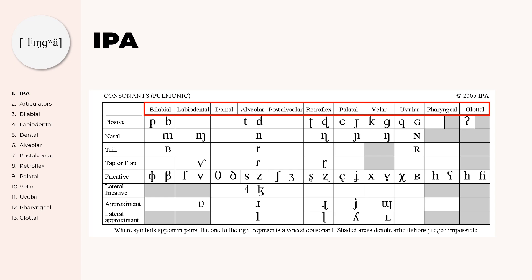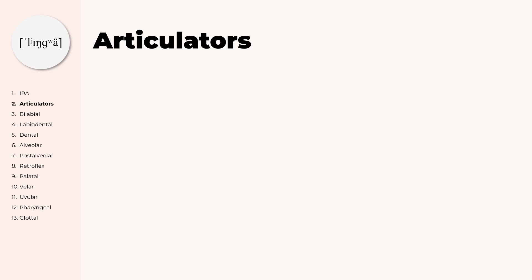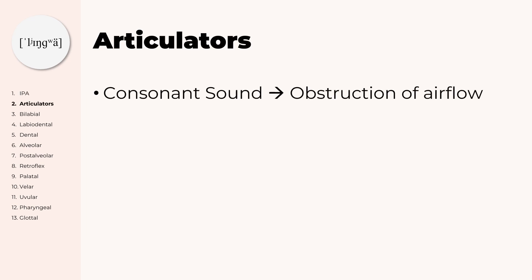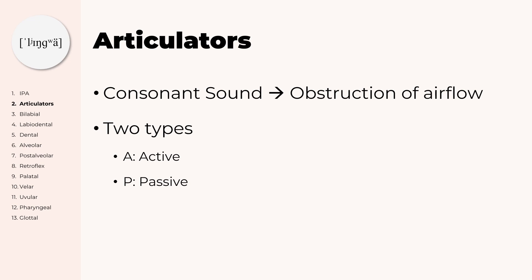To be able to talk about the places of articulation, we need to talk about what articulators are. Consonant sounds are produced when there is an obstruction of the airflow somewhere in the vocal tract. To create an obstruction we need the articulators, and there are two types: the active articulator and the passive articulator. Generally, the passive articulator is stationary and doesn't move during articulation, while the active articulator moves towards the passive articulator. This way the obstruction is formed and a consonant sound can be made. On the next slides, active and passive will be abbreviated as A and P respectively.